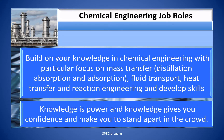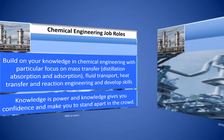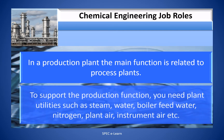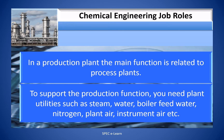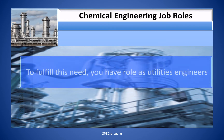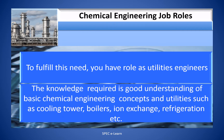Knowledge is power — it gives you confidence and makes you stand apart from the crowd. In a production plant, the main function is related to the process plants. To support the production function, you need plant utilities such as steam, water, boiler feed water, nitrogen, plant air, and instrument air. To fulfill this need, you have a role as utilities engineer. The knowledge required includes a good understanding of basic chemical engineering concepts and utilities such as cooling towers, boilers, ion exchange, and refrigeration.